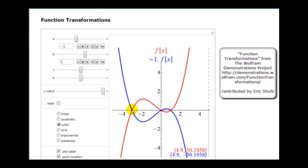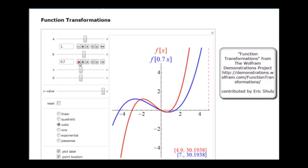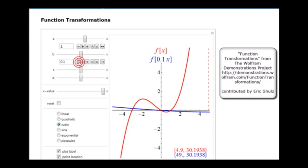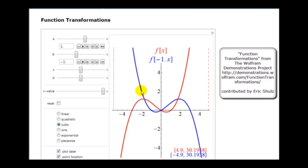Let's now take a look at what happens when b changes from 1 to negative 1. So right now b is equal to positive 1, and as we decrease b, you'll see a horizontal stretch. And then when b turns negative, we'll see a reflection across the y-axis. And when b equals negative 1, we have a perfect reflection of the red function across the y-axis.